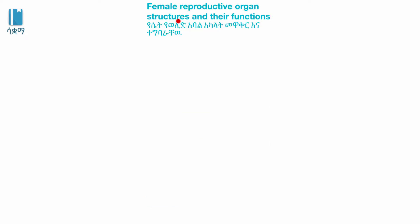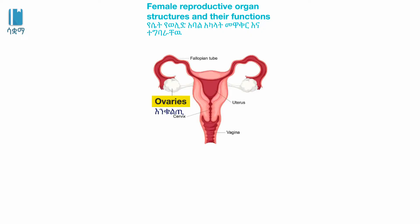Female reproductive organ structures and their functions. The ovaries are stem-like structures that are part of the female reproductive system.